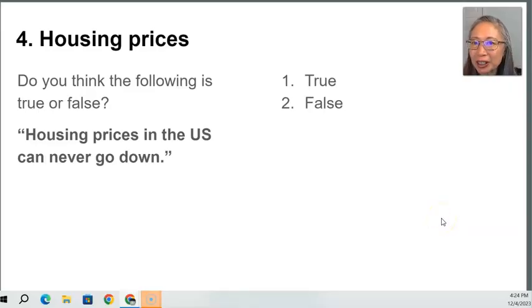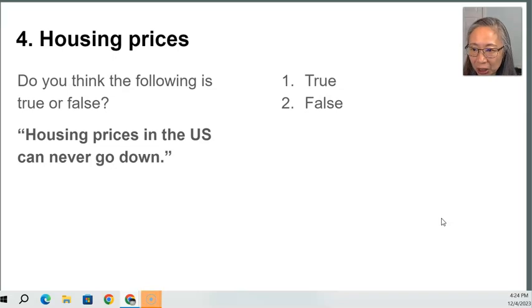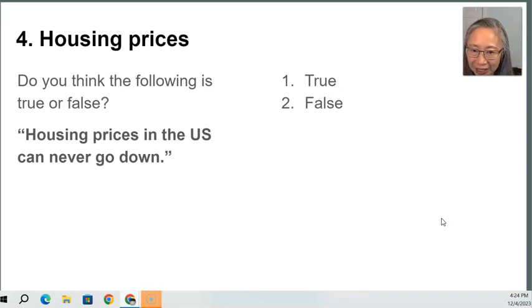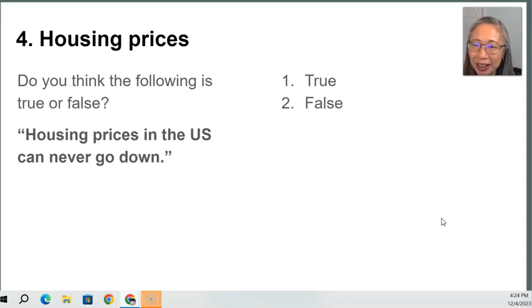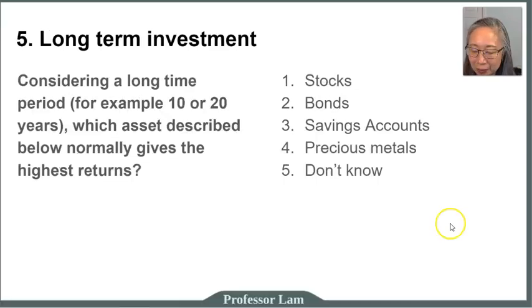Question four has to do with housing prices. Do you think it's true or false? The statement: housing prices in the U.S. can never go down. Write down one if you think it is true and write down two if you think it's false. Pause again if you need more time.